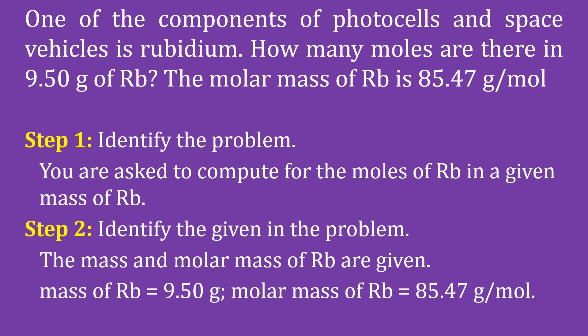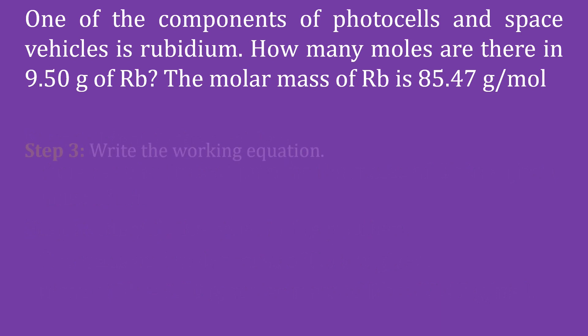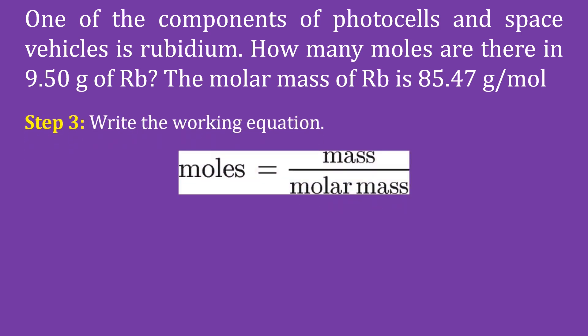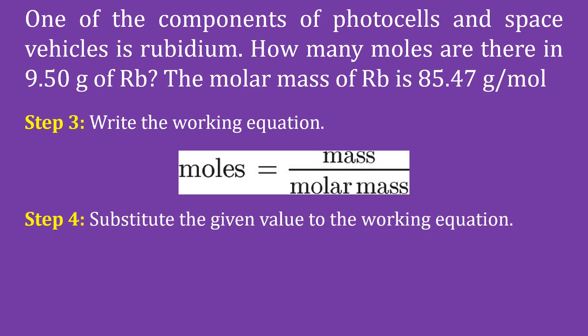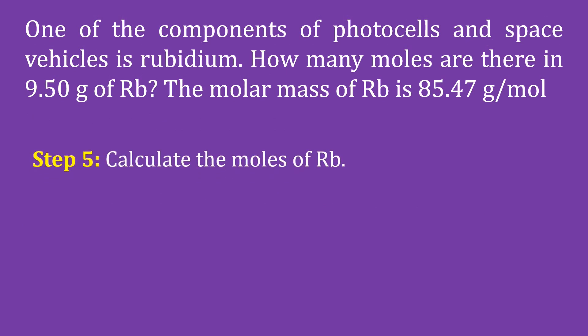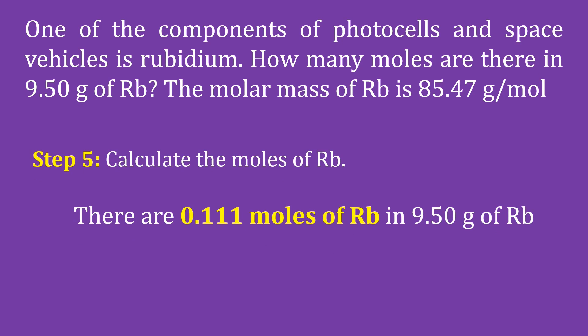Molar mass of rubidium is 85.47 grams per mole. Step 3 is to write the working equation: moles = mass ÷ molar mass. Step 4: substitute the given values — moles = 9.50 grams ÷ 85.47 grams per mole. There are 0.111 moles of rubidium in 9.50 grams of rubidium.